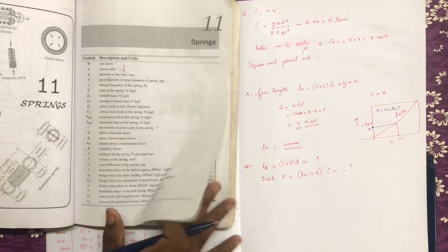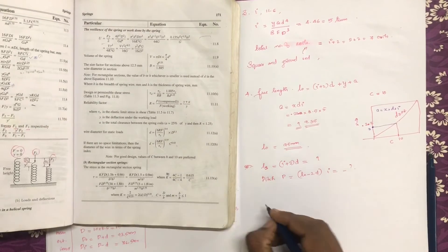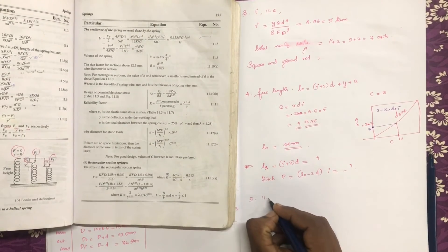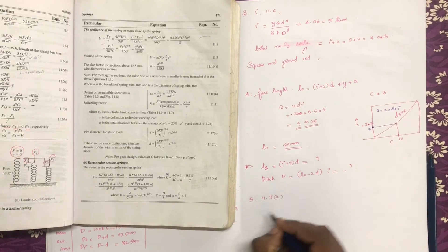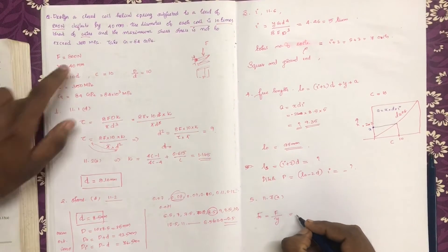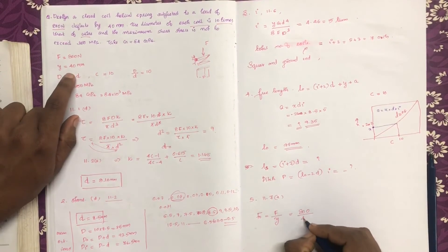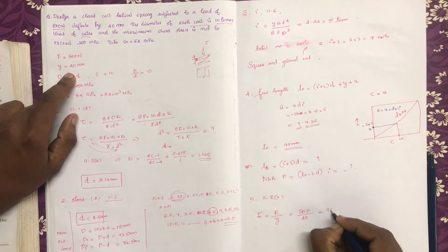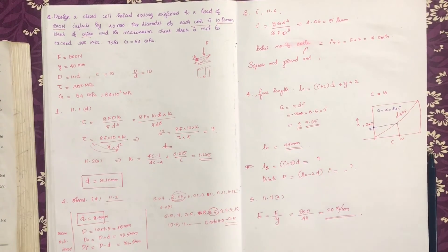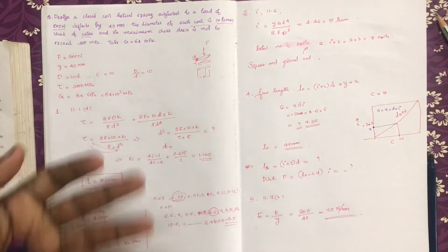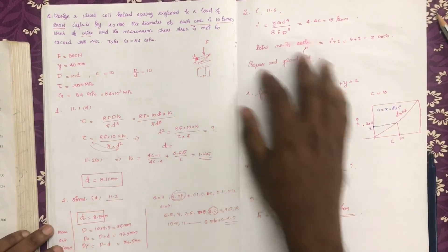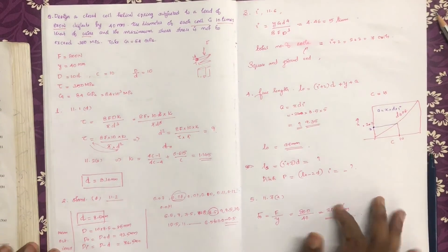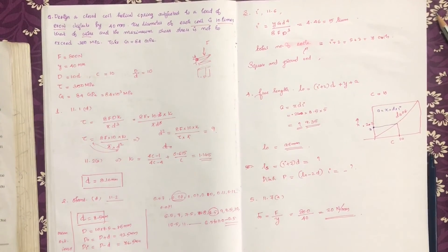Finally, the stiffness is calculated as k = F / δ = 800 / 40 = 20 N/mm. This completes the simple helical spring design procedure.